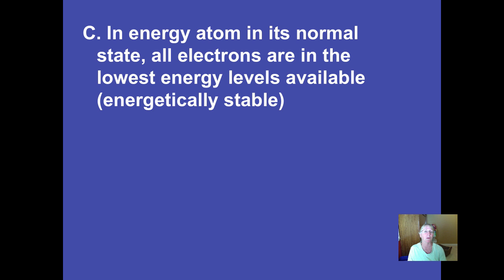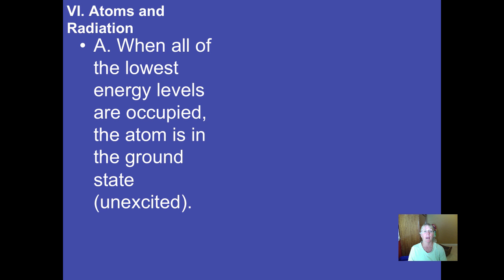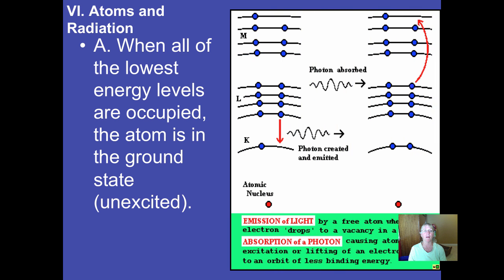When you're in your ground or normal state, the electrons are in their lowest energy levels that are available. It's just more energetically stable. When all of the lowest energy levels are being occupied, we call that being in the ground state or unexcited.